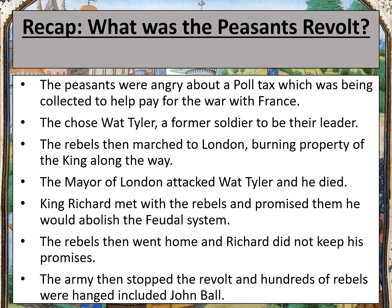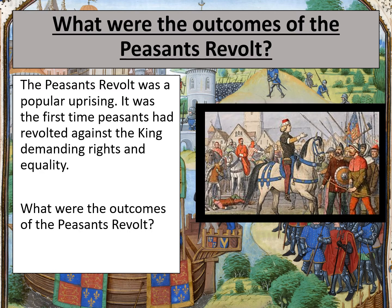However, King Richard did not keep his promises. The army was used to put down the revolts and hundreds of rebels were executed, including John Ball, the Radical Priest. The heads of the rebels were put on spikes outside of London to warn the rebels of what had happened. Although the revolt was defeated, its demands — less harsh laws, money for the poor, freedom and equality — all became part of democracy later on.